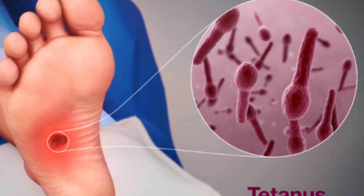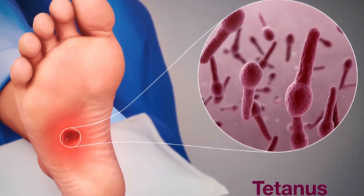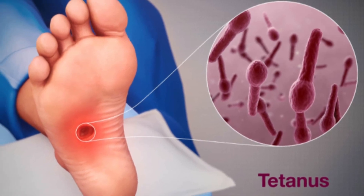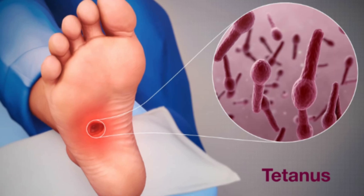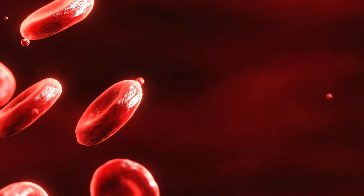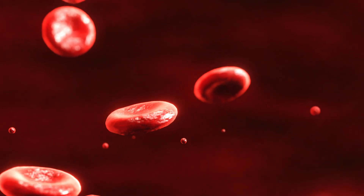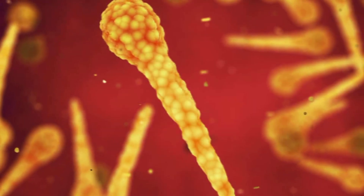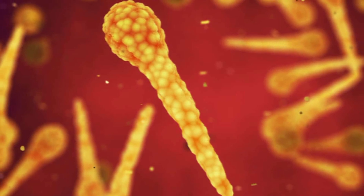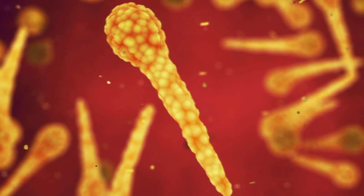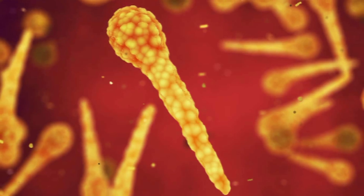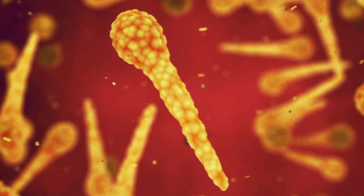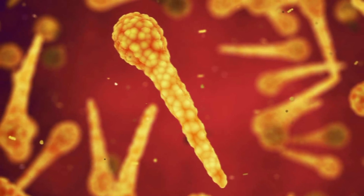Clostridium tetani is a Gram-positive, motile, obligately anaerobic, and spore-forming rod-shaped bacterium. It looks like drumsticks or tennis rackets due to spores located at the end. It is extremely stable in the environment — in spore form it can remain viable for years, and survives at 90°C for about two hours. Spores transform into vegetative forms at 37°C under anaerobic conditions and in the presence of aerobic flora such as staphylococcal. Vegetative forms are sensitive to boiling and die after a few minutes.